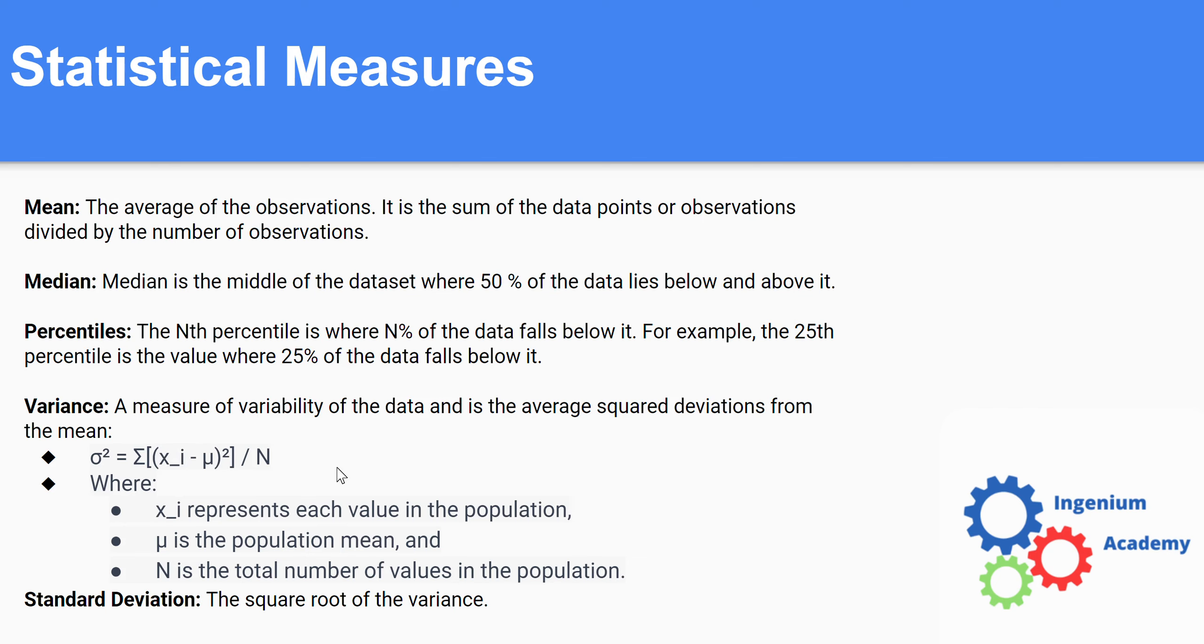And sometimes you'll see it divided by N minus one, but that's besides the point here. But essentially what it's doing is it's just calculating the variability or the deviation of each data point from its mean. And that's a way for us to measure the dispersion or the variability of our data.